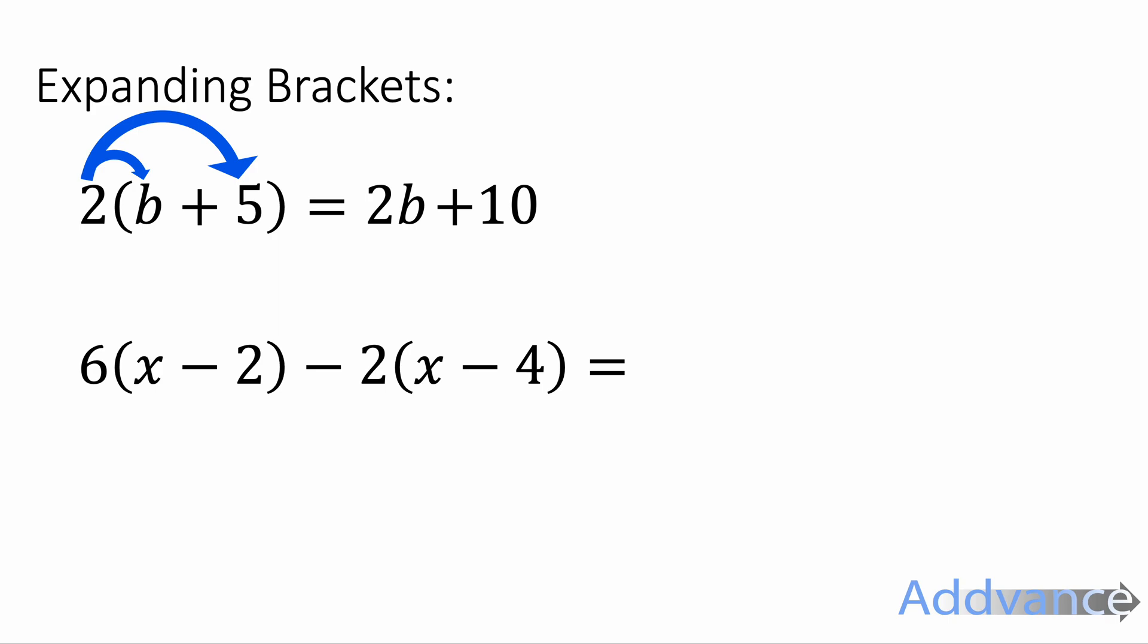Now you're going to do it with two sets of brackets here. So we've got 6 times x and 6 times minus 2, which becomes 6x minus 12. Now minus 2 times x and minus 2 times minus 4. Minus 2 times x is minus 2x. Minus 2 times minus 4 is plus 8, because that is a negative times a negative, which is a positive. We've expanded those brackets now. Just remember to be really careful with your minus signs. And we're going to collect like terms. 6x minus 2x is 4x. Minus 12 plus 8 is minus 4. If you're struggling with your negative numbers, you can watch my video on negative numbers. I will link that in the description as well. We get 4x minus 4. That's the final answer.